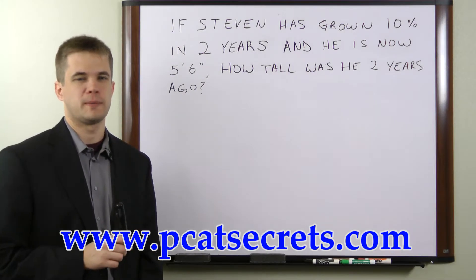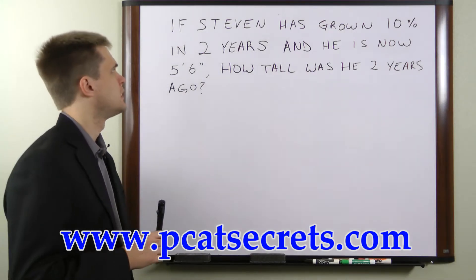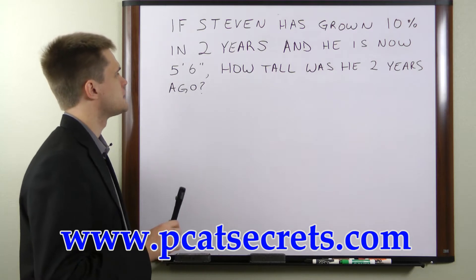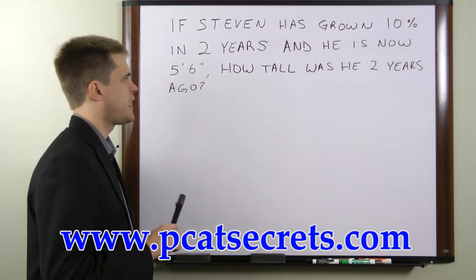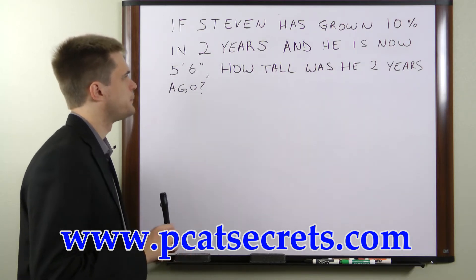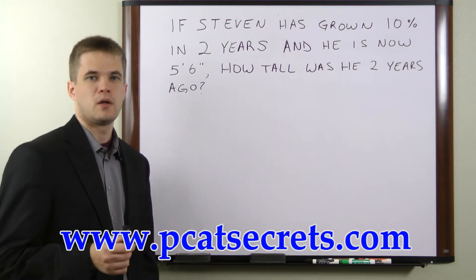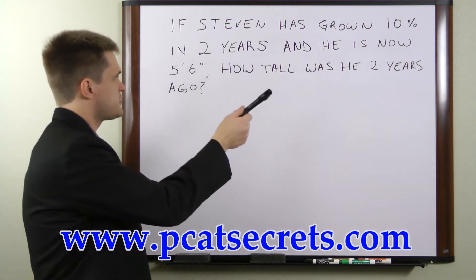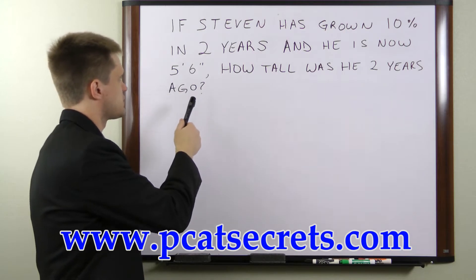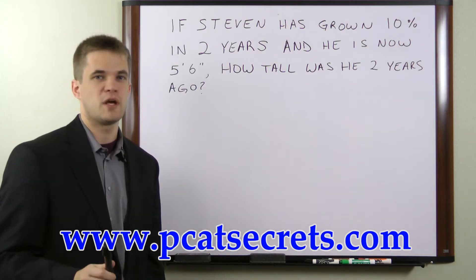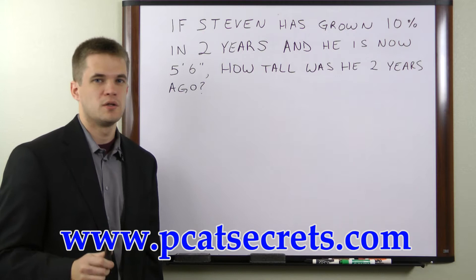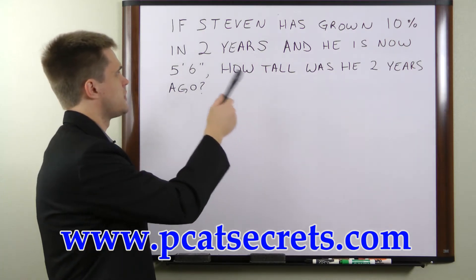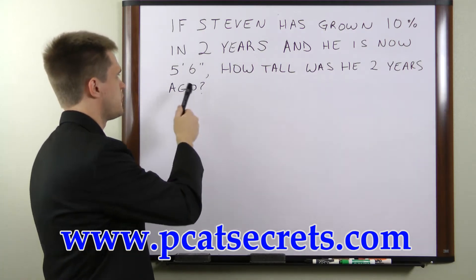Let's take a look at this word problem here. If Stephen has grown 10% in two years and he is now 5 foot 6, how tall was he two years ago? A lot of people will look at this problem and just take 10% away from 5 foot 6 and call that the answer, but that is not the correct answer. To get the correct answer you have to take 10% away from the original height rather than 10% from the current height.